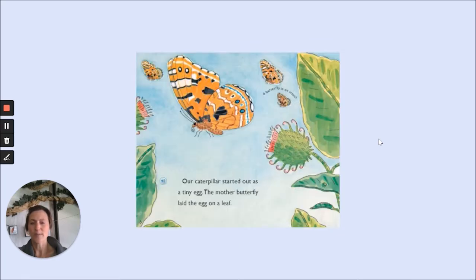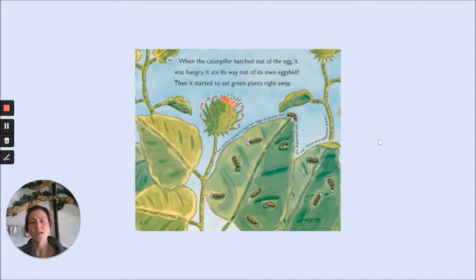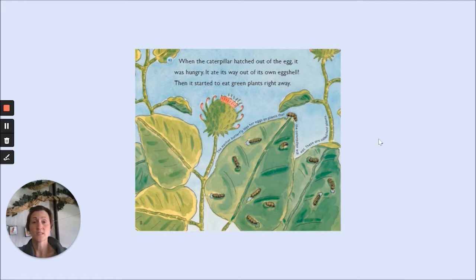Our caterpillar started out as a tiny egg. The mother butterfly laid the egg on a leaf. The egg is tiny — it is the size of a pinhead. When the caterpillar hatched out of the egg, it was hungry. It ate its way out of its own eggshell. Then it started to eat green plants right away. The mother butterfly lays her eggs on plants that the caterpillar will eat. These are called host plants.